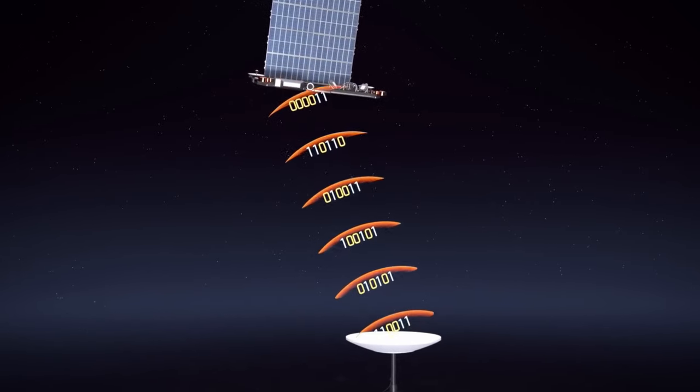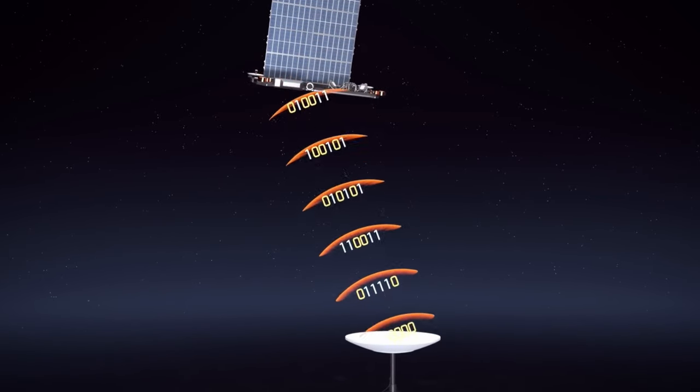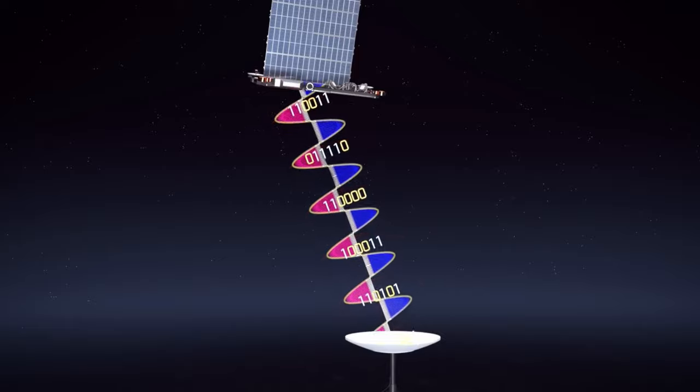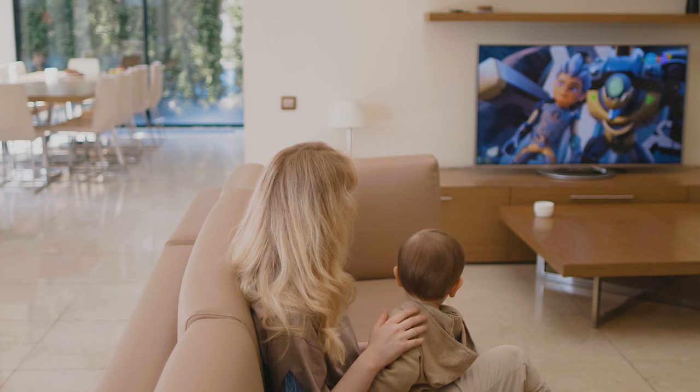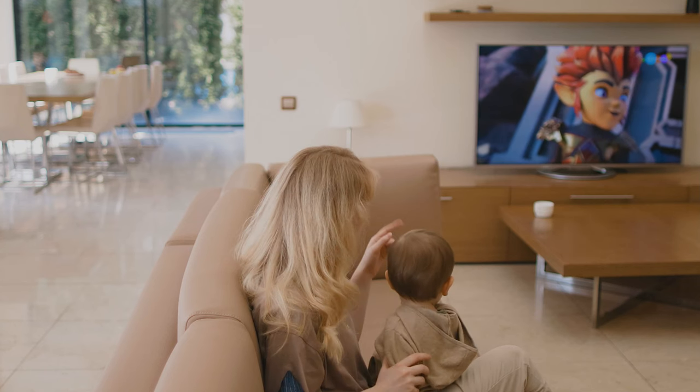Now, let's dive into the process of transmitting data from Dishy to the Starlink satellite. Think of the high-frequency sinusoidal electromagnetic waves. They're far from resembling binary or your typical television program. So, what's happening?